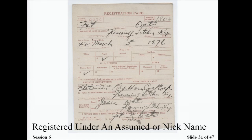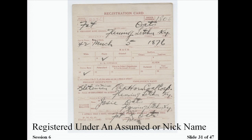This is an example of a man who registered under the nickname 'Fat Oates.' If you were looking for this man without knowing his nickname, it would be very difficult. You could try to track him through his nearest living relative, Josie Oates. This illustrates that registrants did not always use their legal or given name — sometimes they used a middle name or nickname during registration.